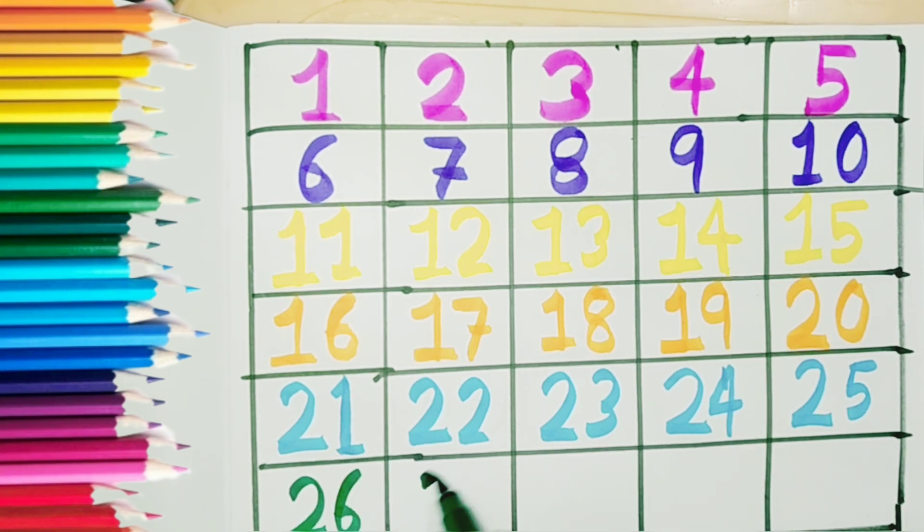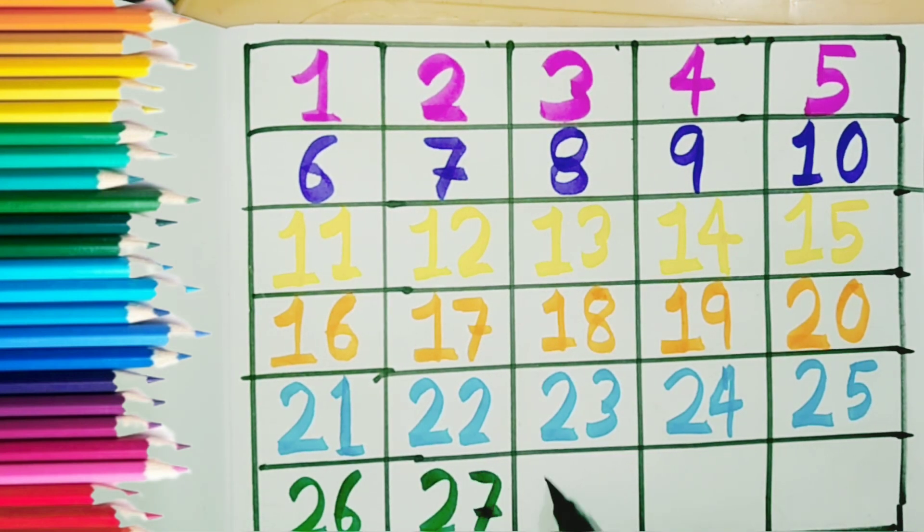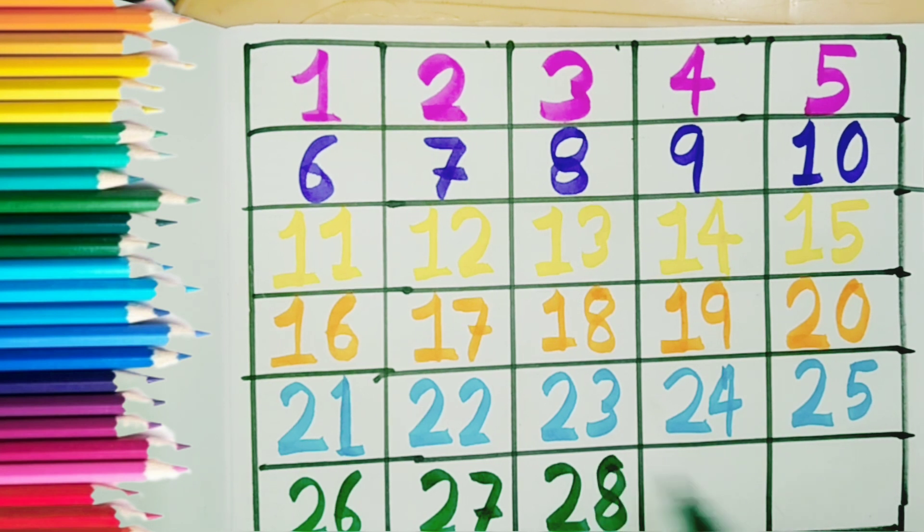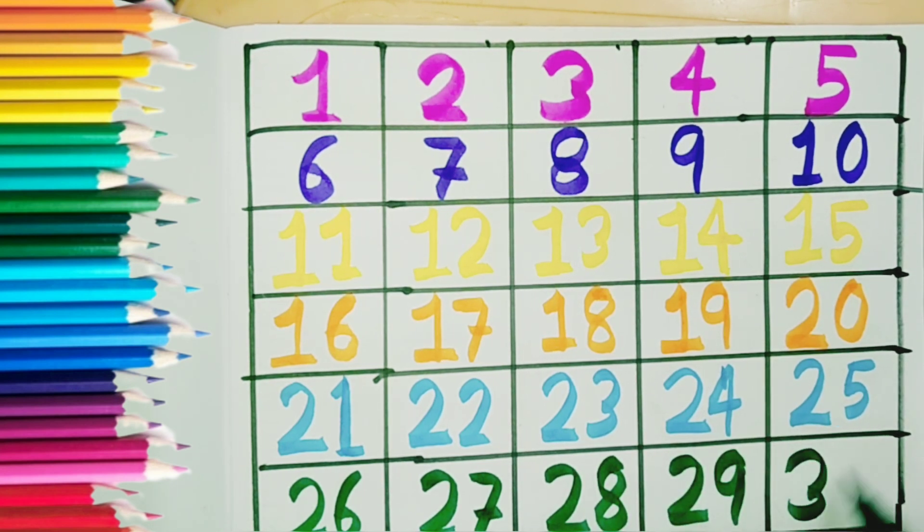Two six, twenty-six. Two seven, twenty-seven. Two eight, twenty-eight. Two nine, twenty-nine. Thirty.